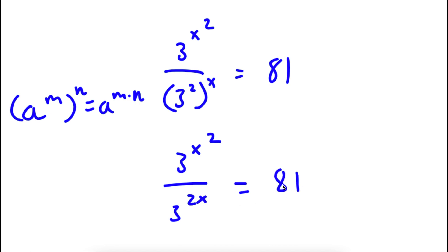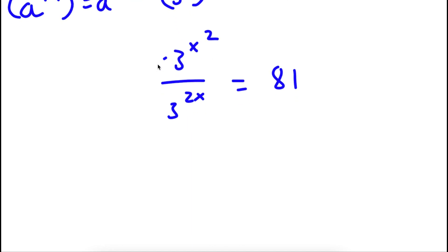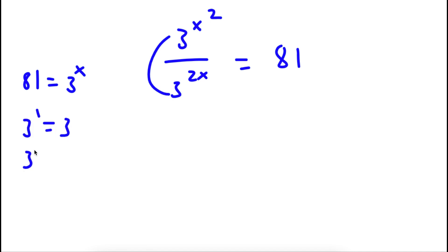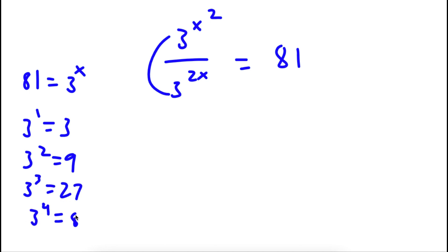Now, this is equal to 81. As you can see, both of our bases are 3, so I'm going to want to change 81 to something with a base of 3. 3 to the power of 1 is 3, 3 to the power of 2 is 9, 3 to the power of 3 is 27, 3 to the power of 4 is 81. So I'm going to change 81 to 3 to the power of 4.